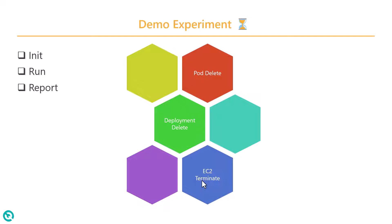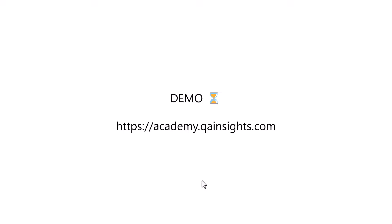In this demo, we are going to execute chaos init, chaos run, and chaos report. We are going to see three different experiments: one is pod delete, another one is deployment delete, and the third one is EC2 terminate — with attaching and detaching the volume and starting the instance.